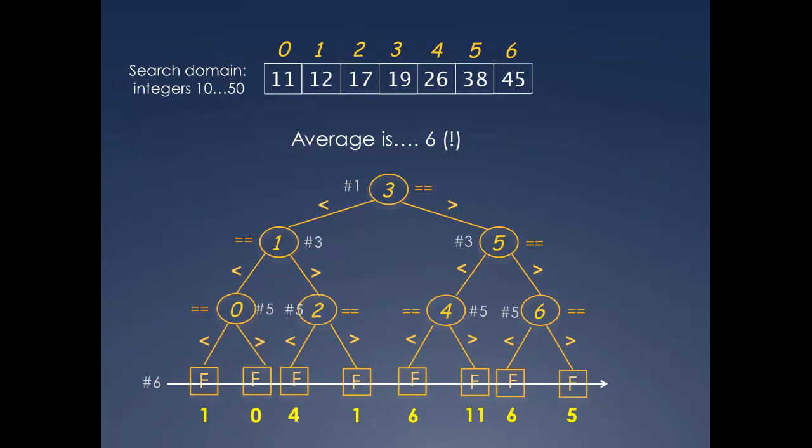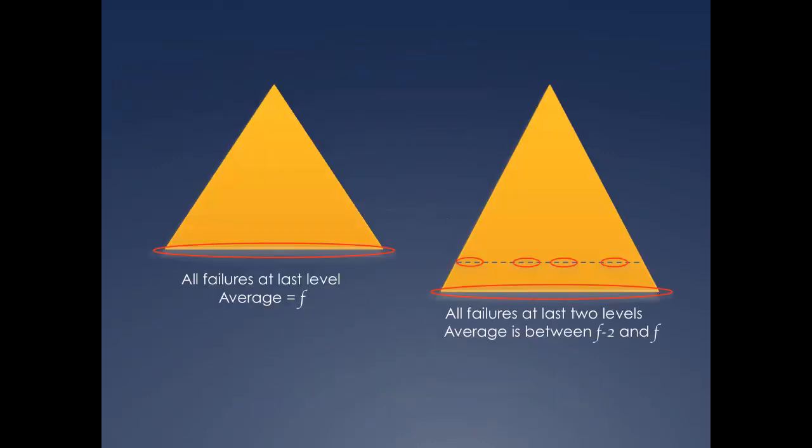In fact, we never need to do the average computation for failures for any comparison tree. Either all failure nodes are the last level, or some in the last and others in the second to last. If the former, the average is exactly the same as the number of comparisons for any one failure, say f. If the latter, it is somewhere between f and f-2, where f is the number of comparisons for any failure at the last level, and f-2 is the number of comparisons for any failure at the second to last level.